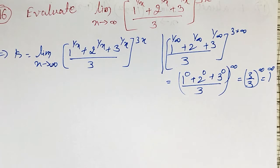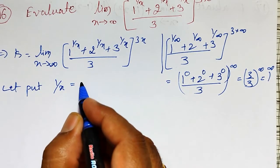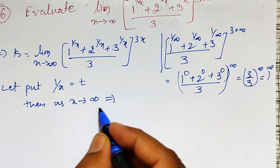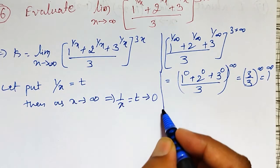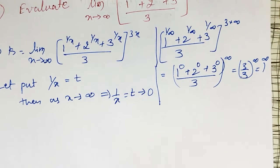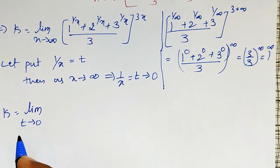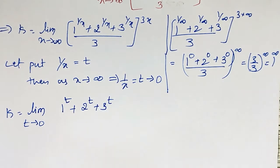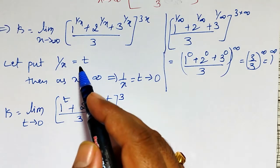Let 1/x = t. Then as x tends to infinity, t = 1/x tends to 0. Let me substitute: k equals the limit as t tends to 0 of ((1^t + 2^t + 3^t) / 3)^(3/t). This form with t is simpler to differentiate, which is why I am making this substitution.